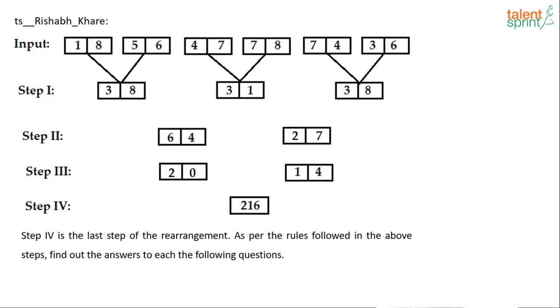As you can see, it's an input-output based question where we have six two-digit numbers in the input. We perform some operation in a step-by-step process with different operations in different steps to arrive at the final output, which is given in step number four. What we have to do is: step four is the last step of the rearrangement. As per the rules following the above steps, find out the answers to each of the following questions. So basically, we'll be given one more set of input. We need to perform the same operations as given here on that particular input and then answer the questions asked. What is really required here is the idea behind the steps given here.